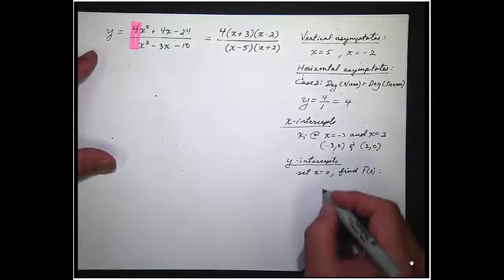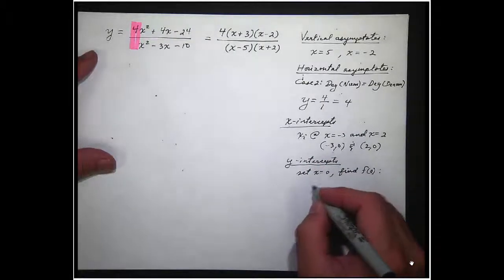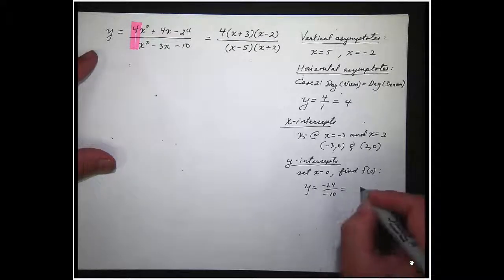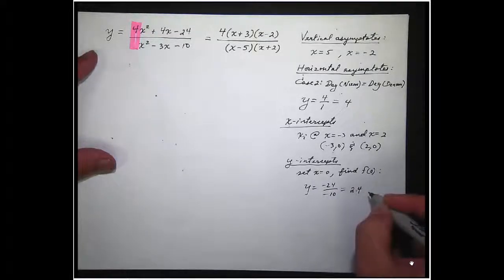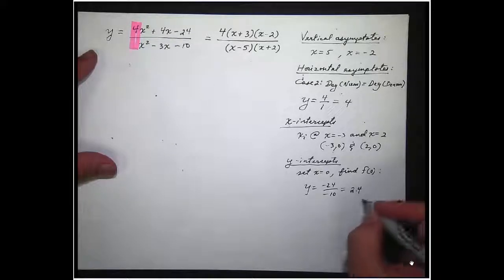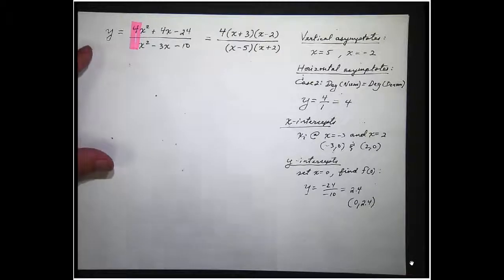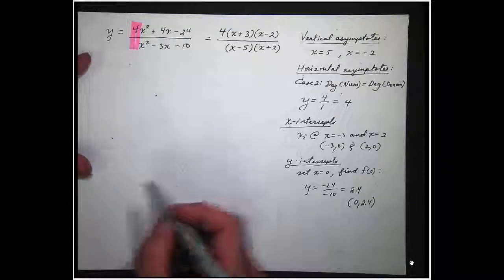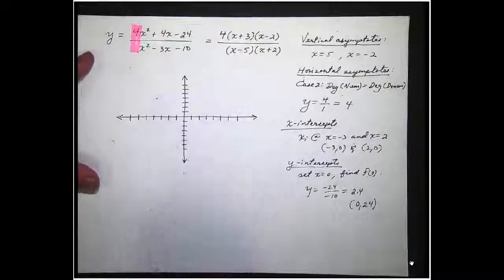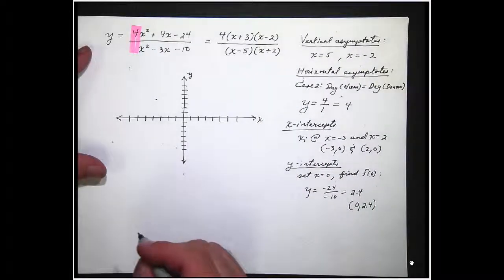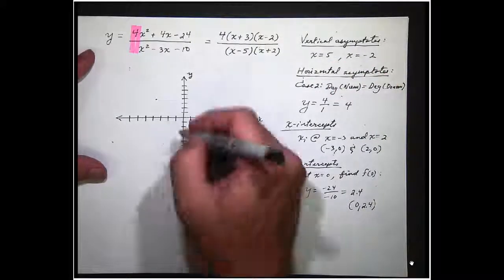So when x equals 0, y equals negative 24 over negative 10, which is 2.4. So the y-intercept is 0 comma 2.4. So let's graph what we have so far. So there's my graph. I've got my x-axis, my y-axis. Putting all these things on there.